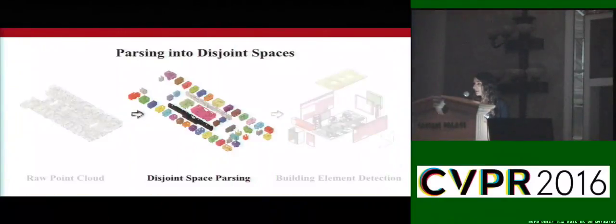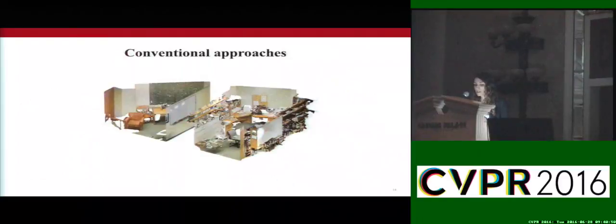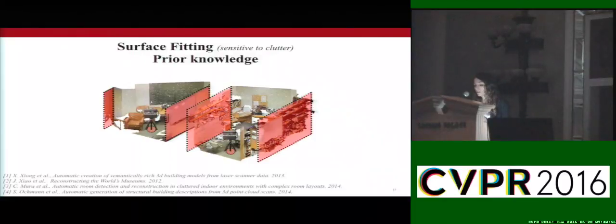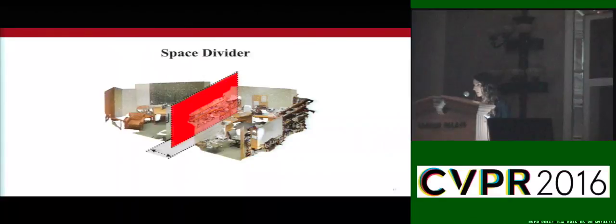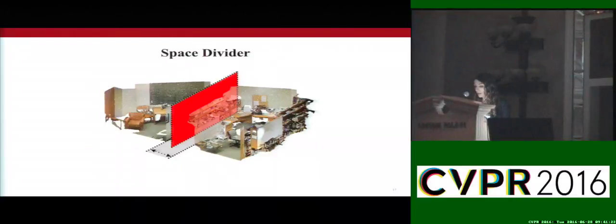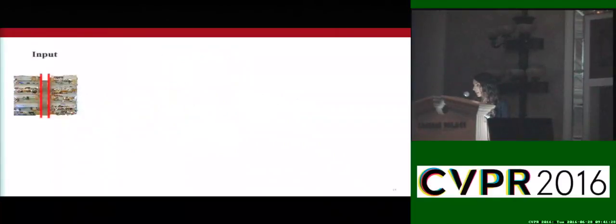Now we explain how we parse the input into disjoint spaces. Here is an example of two adjacent disjoint spaces. Conventional approaches on space parsing resort to surface-fitting algorithms that are challenged in cluttered scenes and have several parameters to fine-tune. Others also require prior knowledge, such as scan locations. Instead of looking for flat surfaces, we identify the empty area between two disjoint spaces, which corresponds to the interior of the wall not visible to the sensing device. The empty space is a more unique and invariant signature of space dividers in the point cloud, which leads to robustness to clutter and sensing noise.